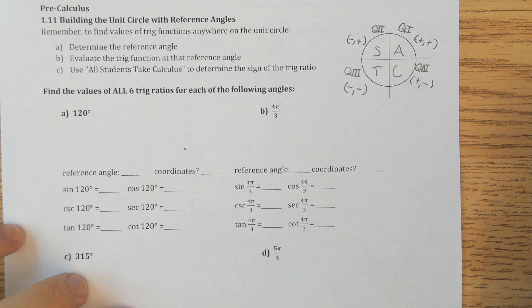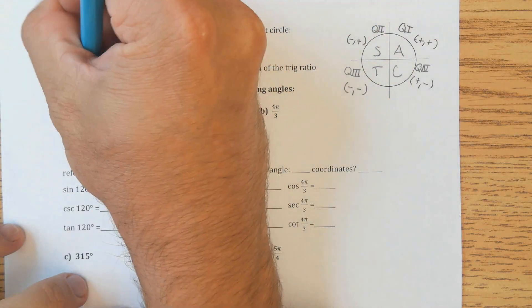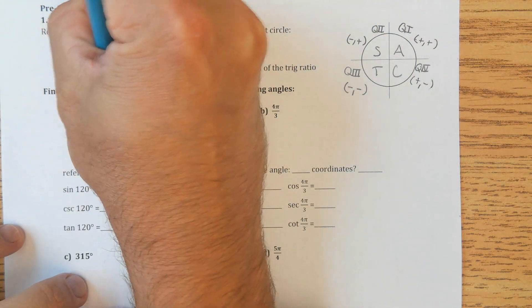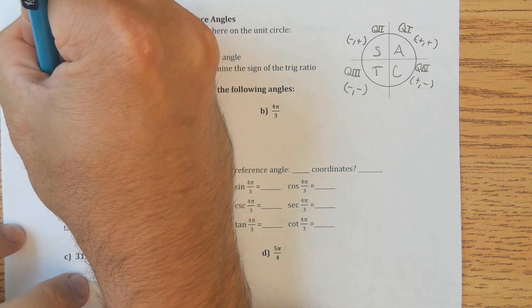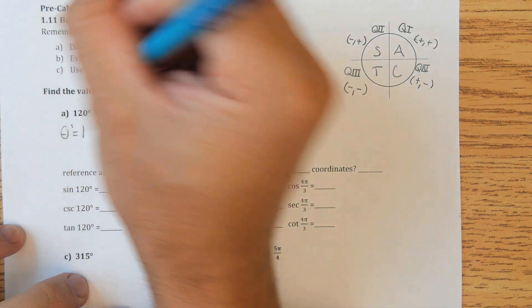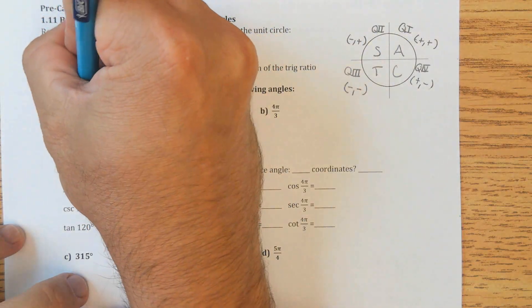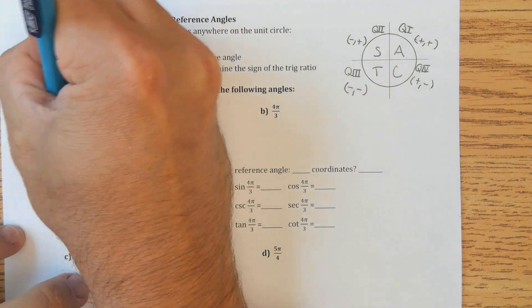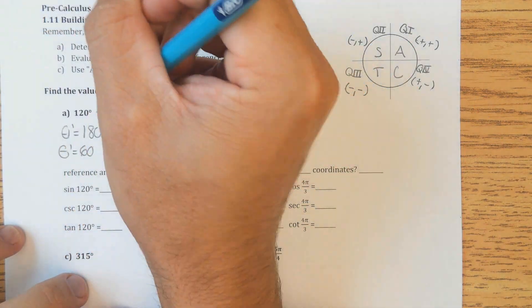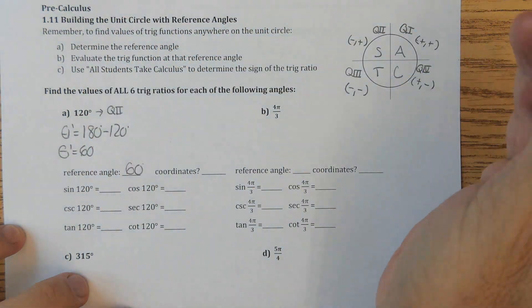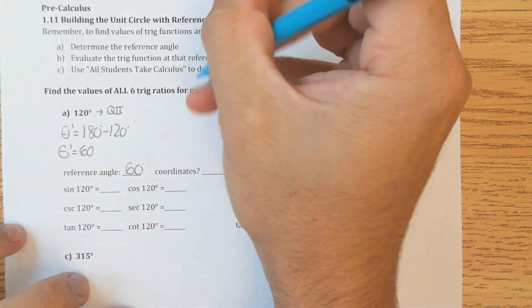For the first question, 120 degrees — where is 120 degrees? It's in quadrant two. So the reference angle for 120 degrees is found by taking 180 degrees minus 120 degrees. That's our rule, so our reference angle is 60 degrees, meaning we're dealing with the 60-degree family.